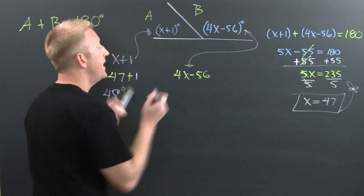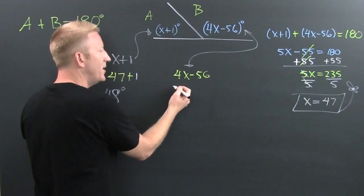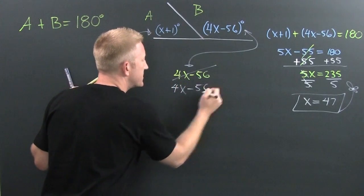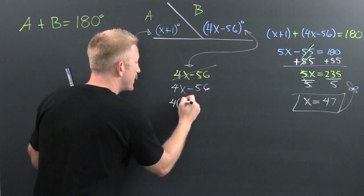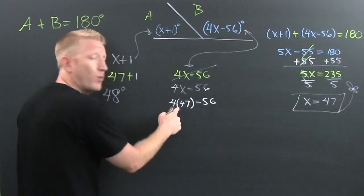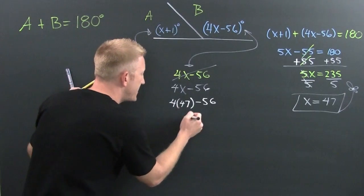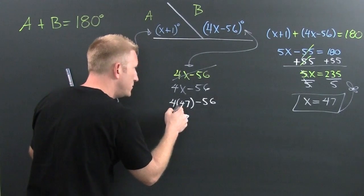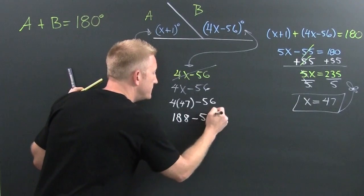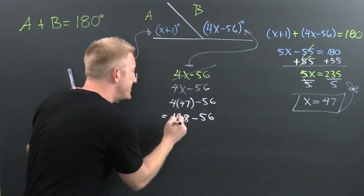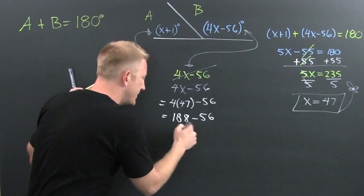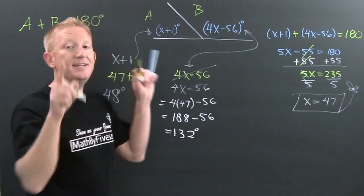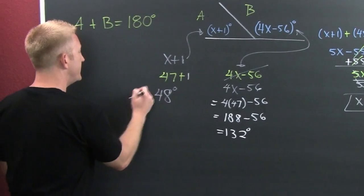What about the second angle? If 4x minus 56 is that angle and x is 47, then we have 4 times 47 minus 56. So 4 times 7 is 28, carry the 2; 4 times 4 is 16, plus 2 is 18 — so 188 minus 56 gives us 132 degrees.